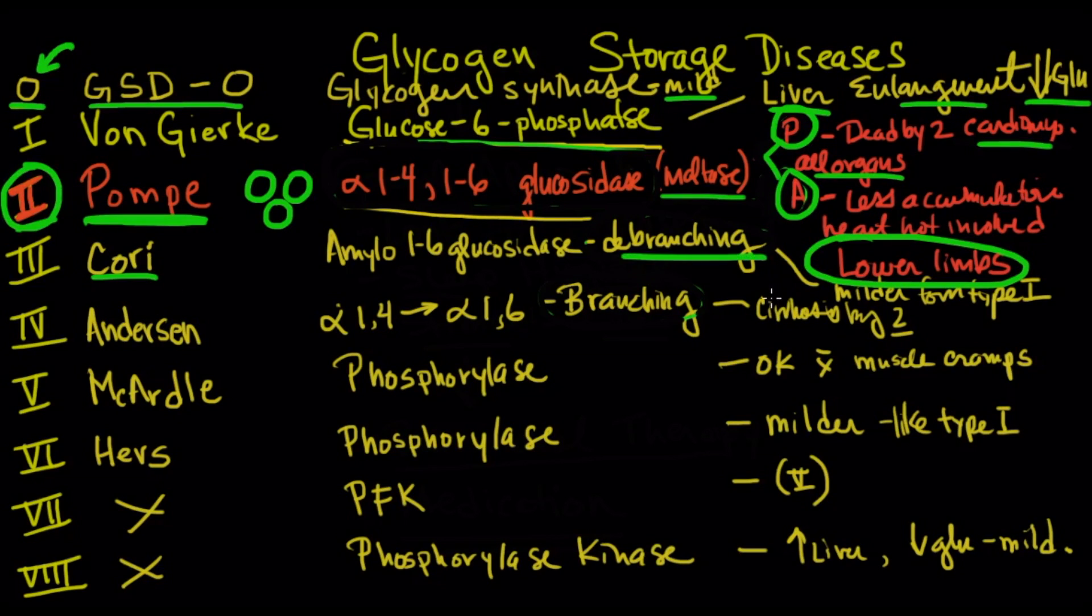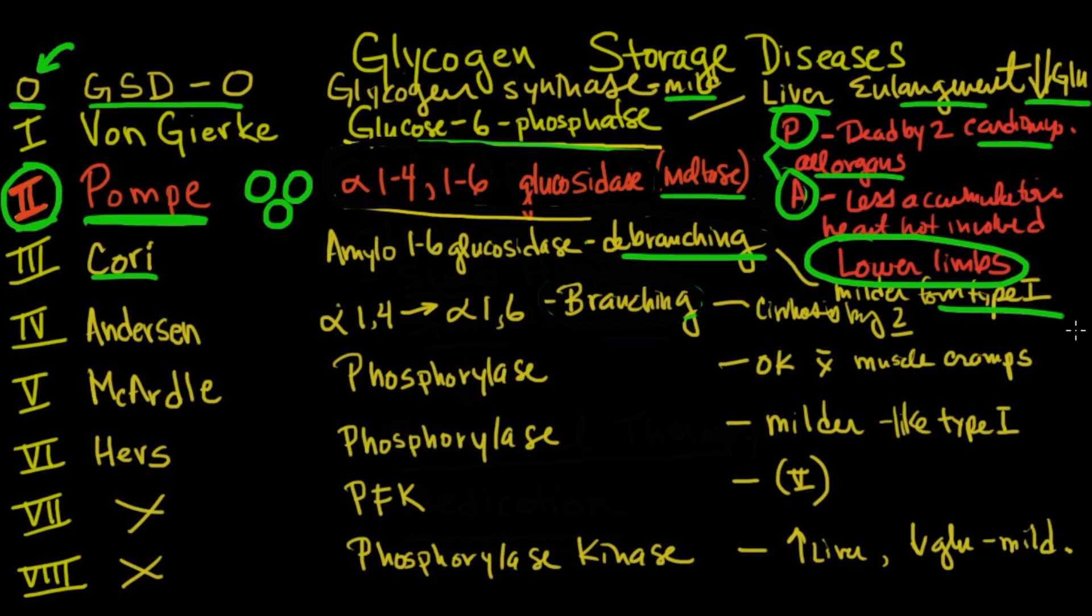Cori is the de-branching enzyme. It's a milder form of type 1, whereas Anderson is a branching enzyme and it's very severe. So think of the branching as severe and the de-branching is not so severe. I don't know if it'll be helpful to memorize amylo-1,6-glucosidase for the de-branching or alpha-1,4, alpha-1,6 for the branching. But you may need to know these, although Cori and Anderson are probably not tested as often.